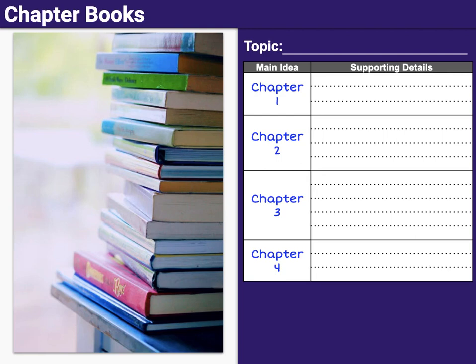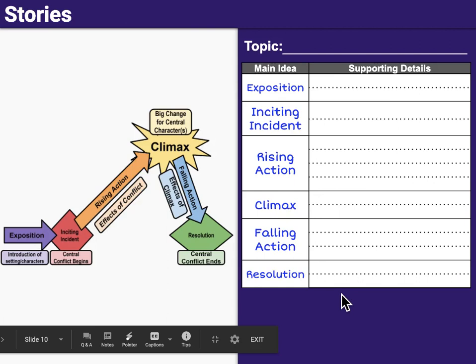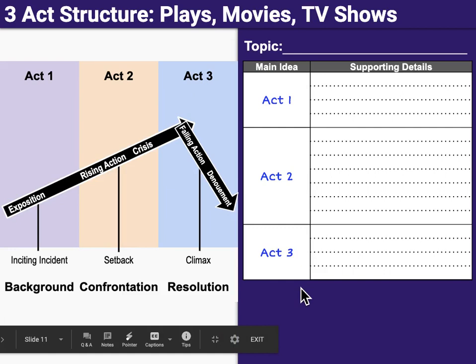If you're reading a story, you may want to divide it by the story structure: exposition, inciting incident, rising action, climax, falling action, and resolution. Similarly, if you're watching a play, movie, or TV show, you may want to divide it by the three-act structure — act one, act two, act three.